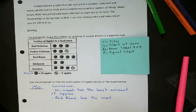And we can say that Red Rome has the most. You can also look at specific types. So you can say that Golden Delicious and McIntosh, the least popular types of apples, have a total of 45 apples in store. So those are the conclusions you make.